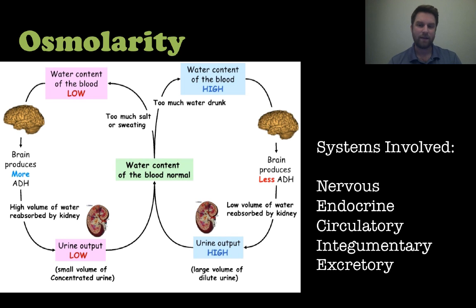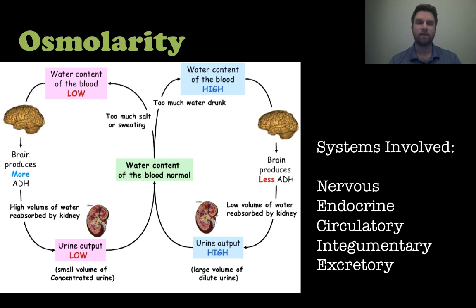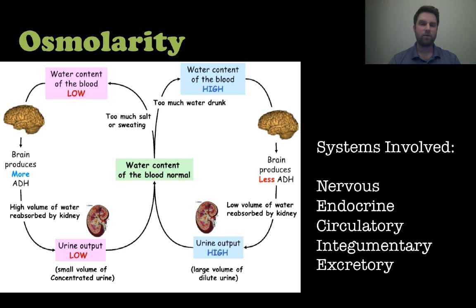Here are all the systems involved in osmolarity: the nervous system to detect changes, the endocrine system to secrete hormones, the circulatory system to transport hormones, the integumentary system with its sweat glands, and the excretory system where the kidneys excrete urine. In the negative feedback loop: if you start with normal water content and lose too much salt through sweating, your blood water content drops, your brain produces a hormone that acts on the kidneys, telling them to reabsorb more water so you urinate less. Make sure to review the full chart to better understand how these systems work together.